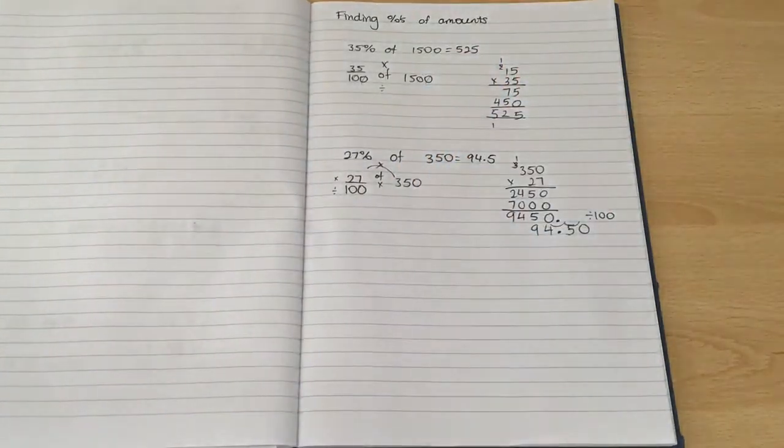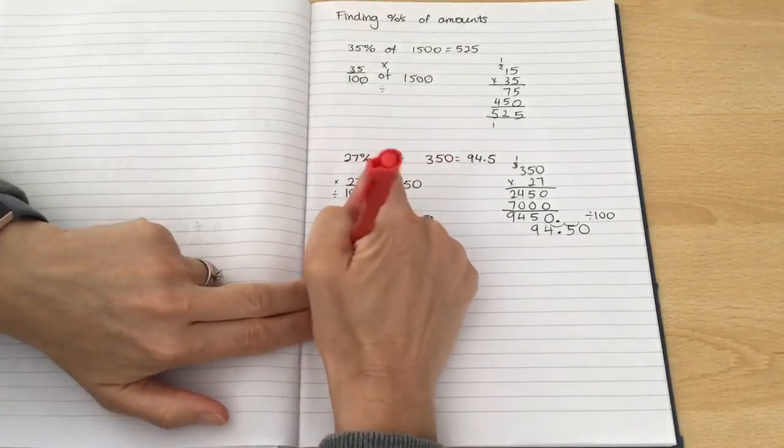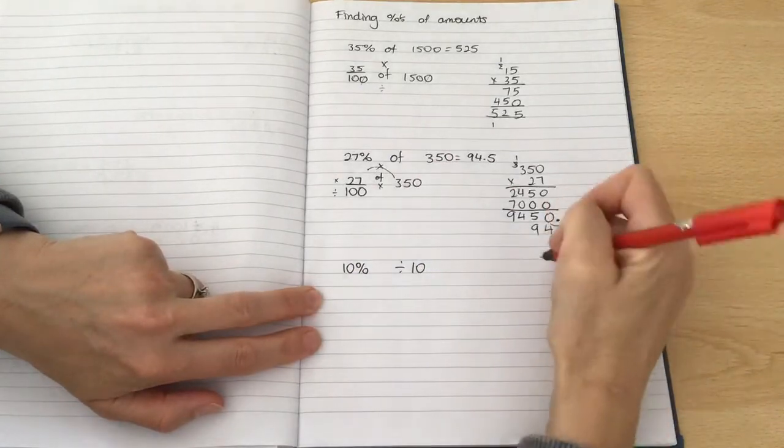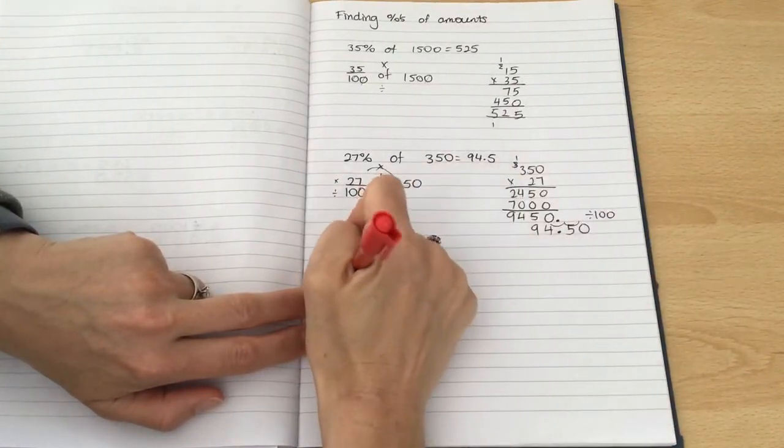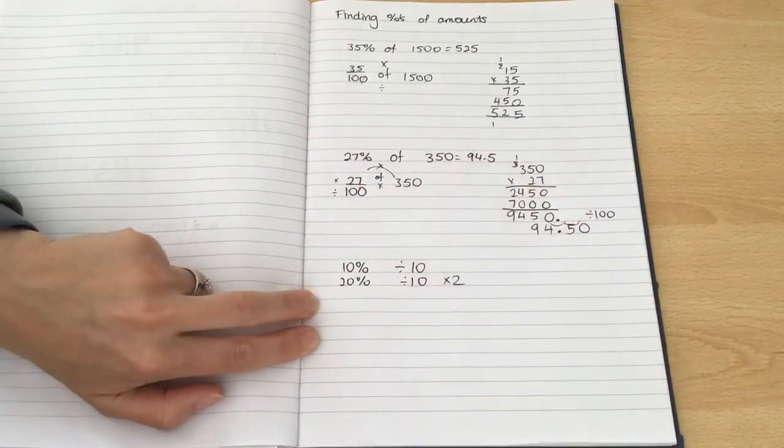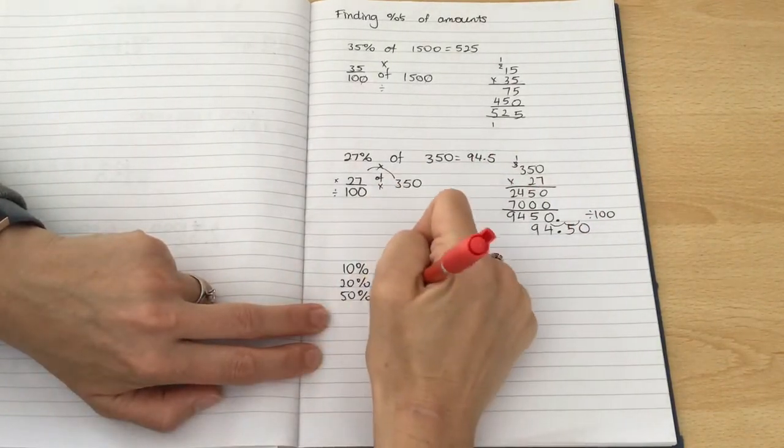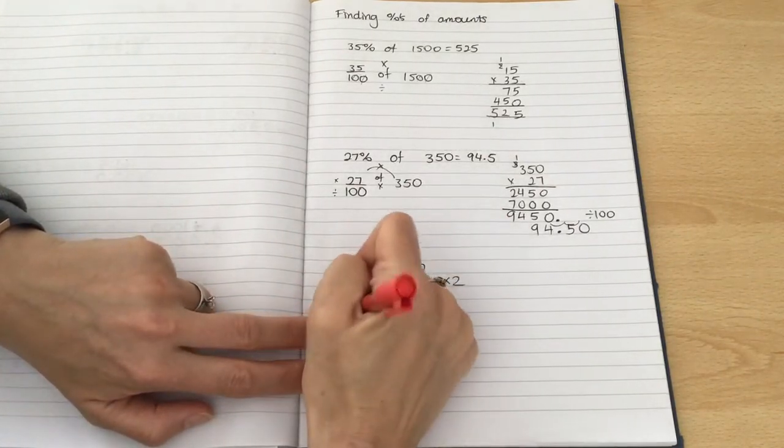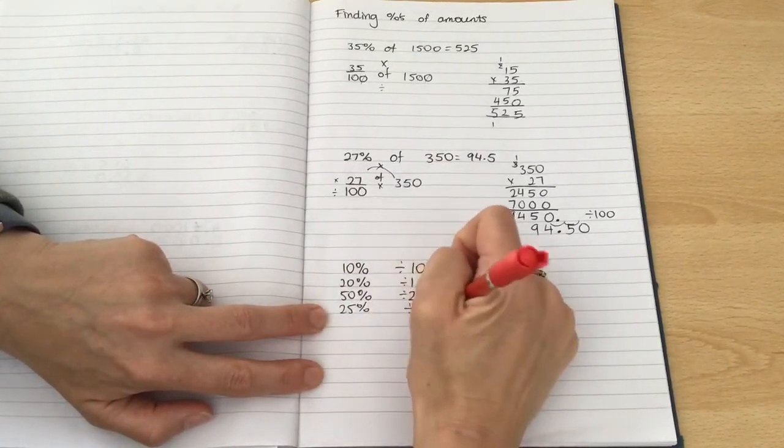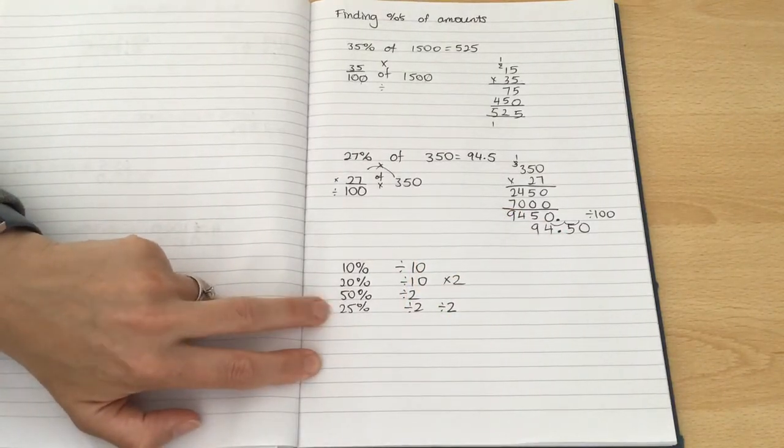So they were the methods that we've been using to find fractions of amounts for any amount. Don't forget that to find 10% of a number, we divide by 10. So if I wanted to find 20% of a number, I would divide it by 10 and then double it. If I wanted to find 50% of a number, I know that 50% equals half, so we divide it by 2. I know that 25% is the same as a quarter, so I halve that. Then I halve that again to find 25%.